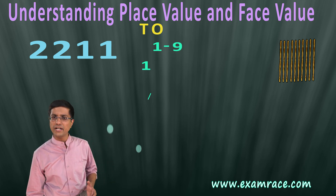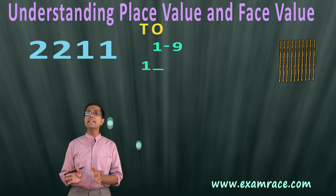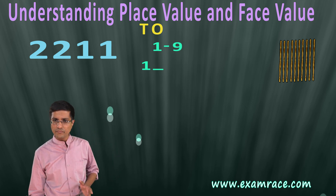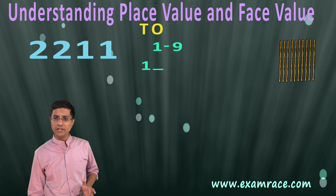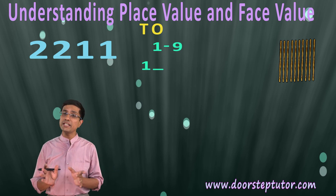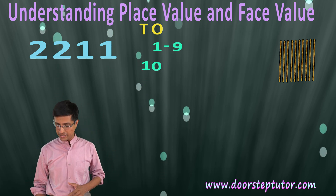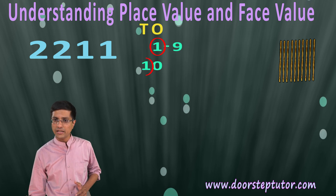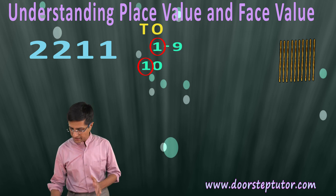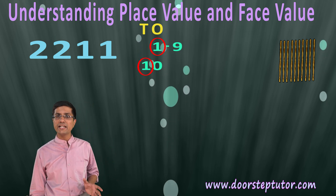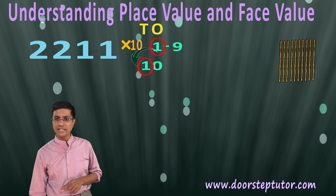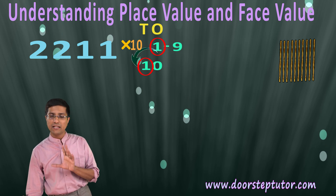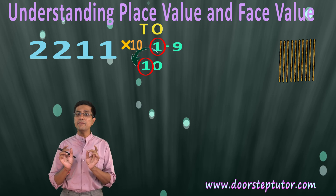So this zero is just a placeholder. I could have simply written one dash — that would have worked as well. The only thing is to indicate that this one is not sitting in the ones place or the units place, but it's sitting in the tens place. The position of this one has become significant. This one and this one, although they look the same, the one to the left is ten times bigger than the one to the right. It's multiplied by ten. That is the most important thing in understanding place value.